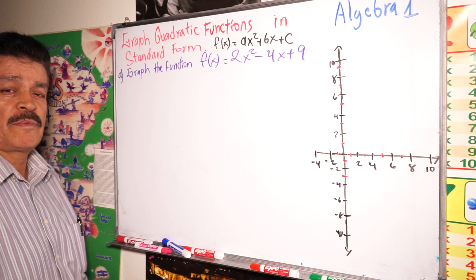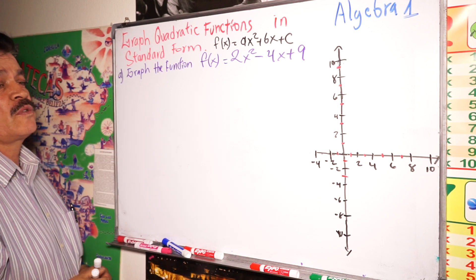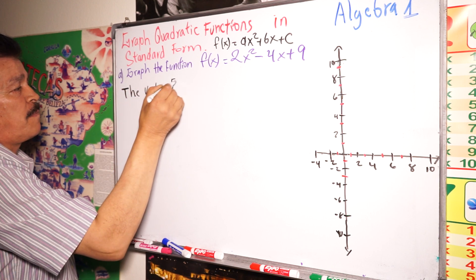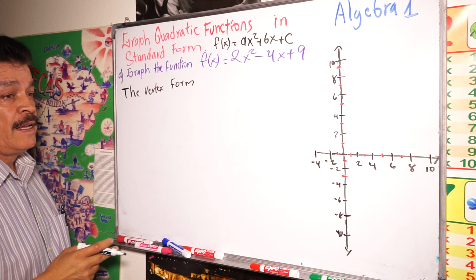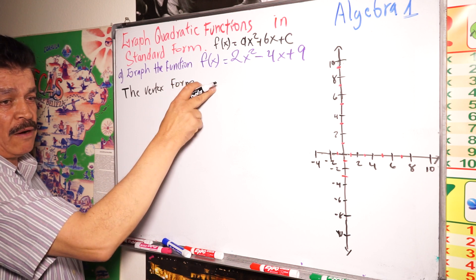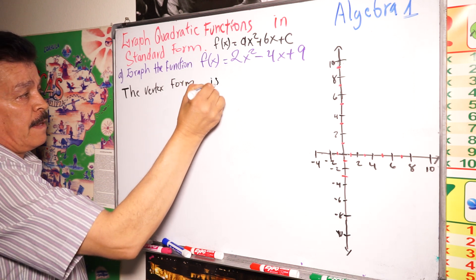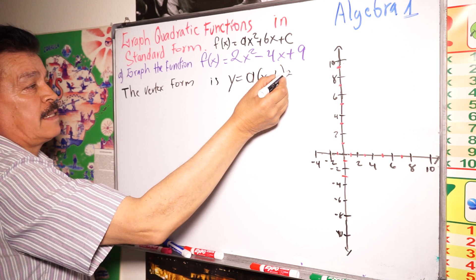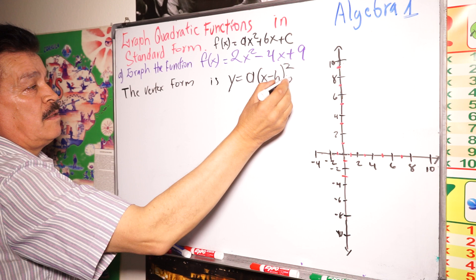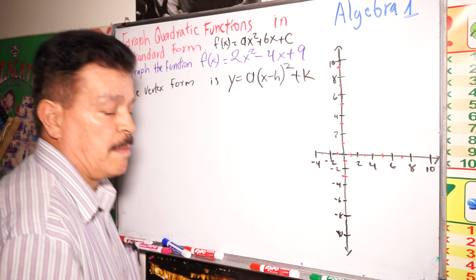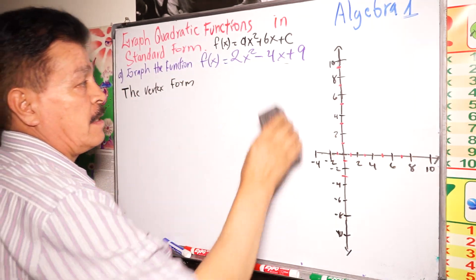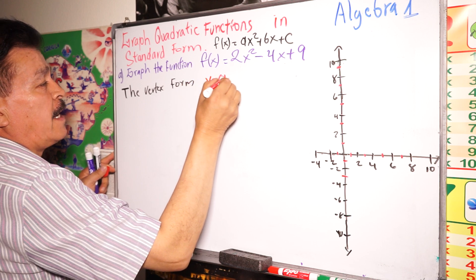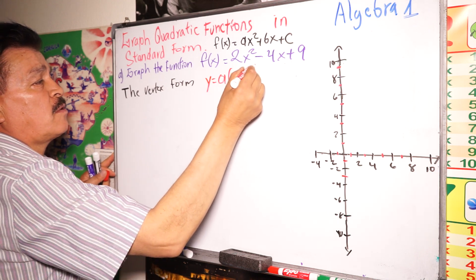Before solving the problem, I'm going to explain some concepts. The first concept we have to remember is the vertex form. This is the form of a parabola — the parabola opens up or down. The vertex form is: y equals a times (x minus h) squared plus k.